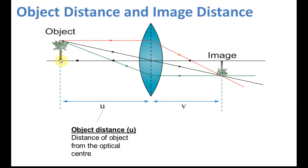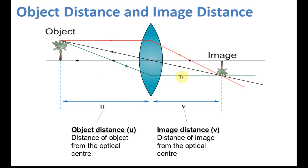The object distance is the distance of the object from the optical center, and the image distance is the distance of the image from the optical center. Students sometimes ask how to know where the image is — the image is at the point where all the light rays are focused. You can see these three light rays focusing at one point, and therefore that point is the image point. In an exam, you need to know where the image is: the image is where the light rays are focused.